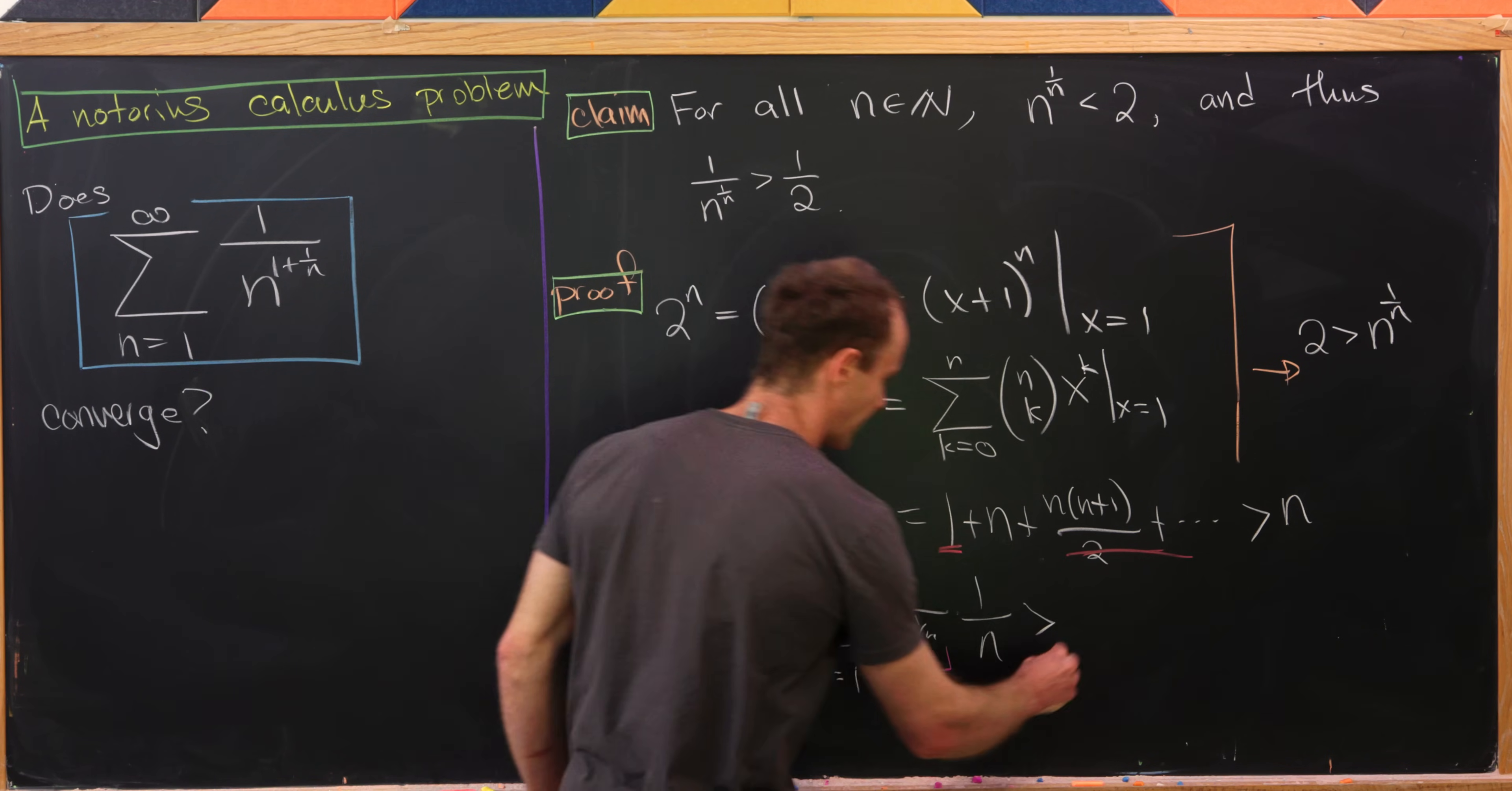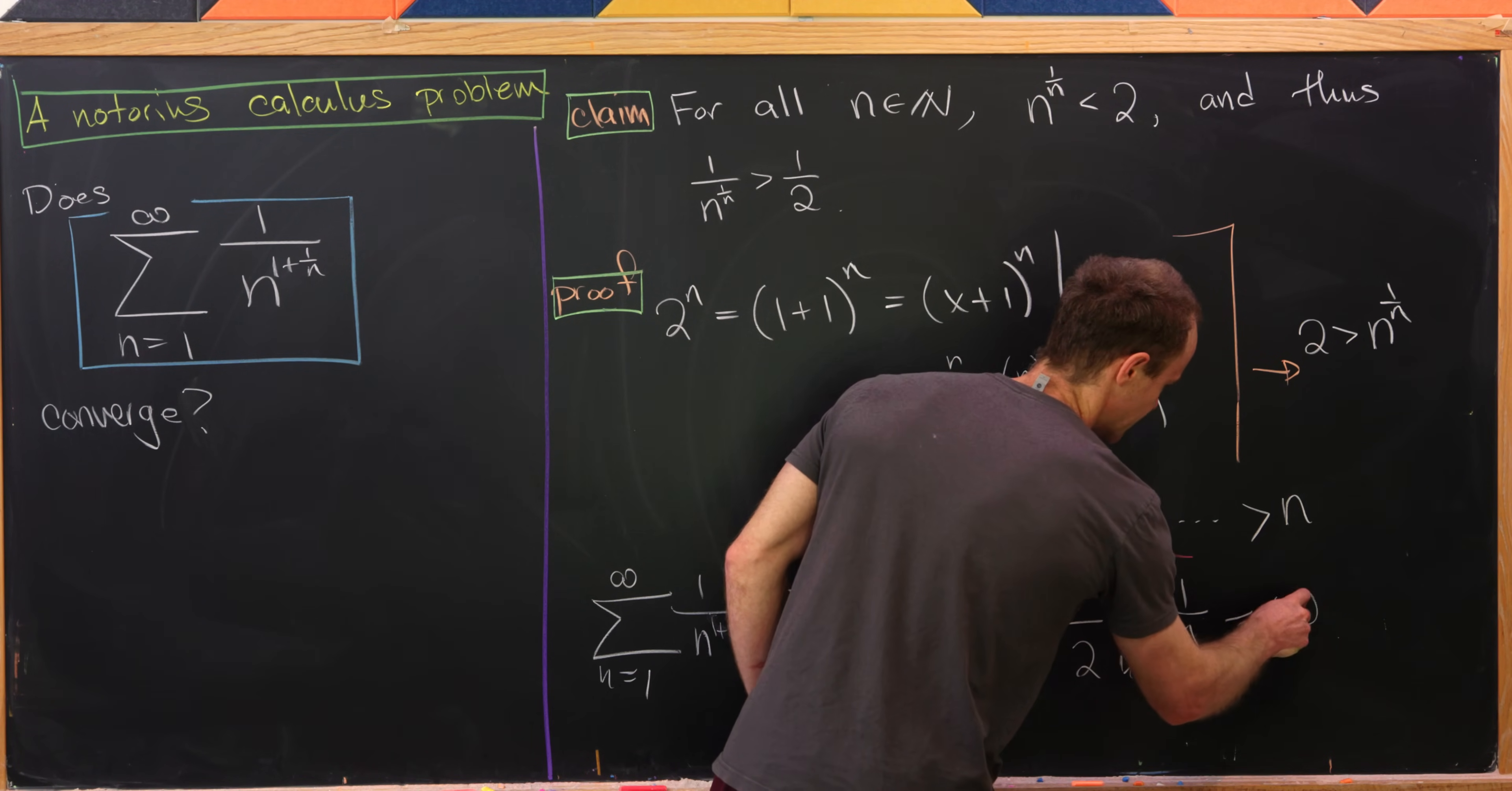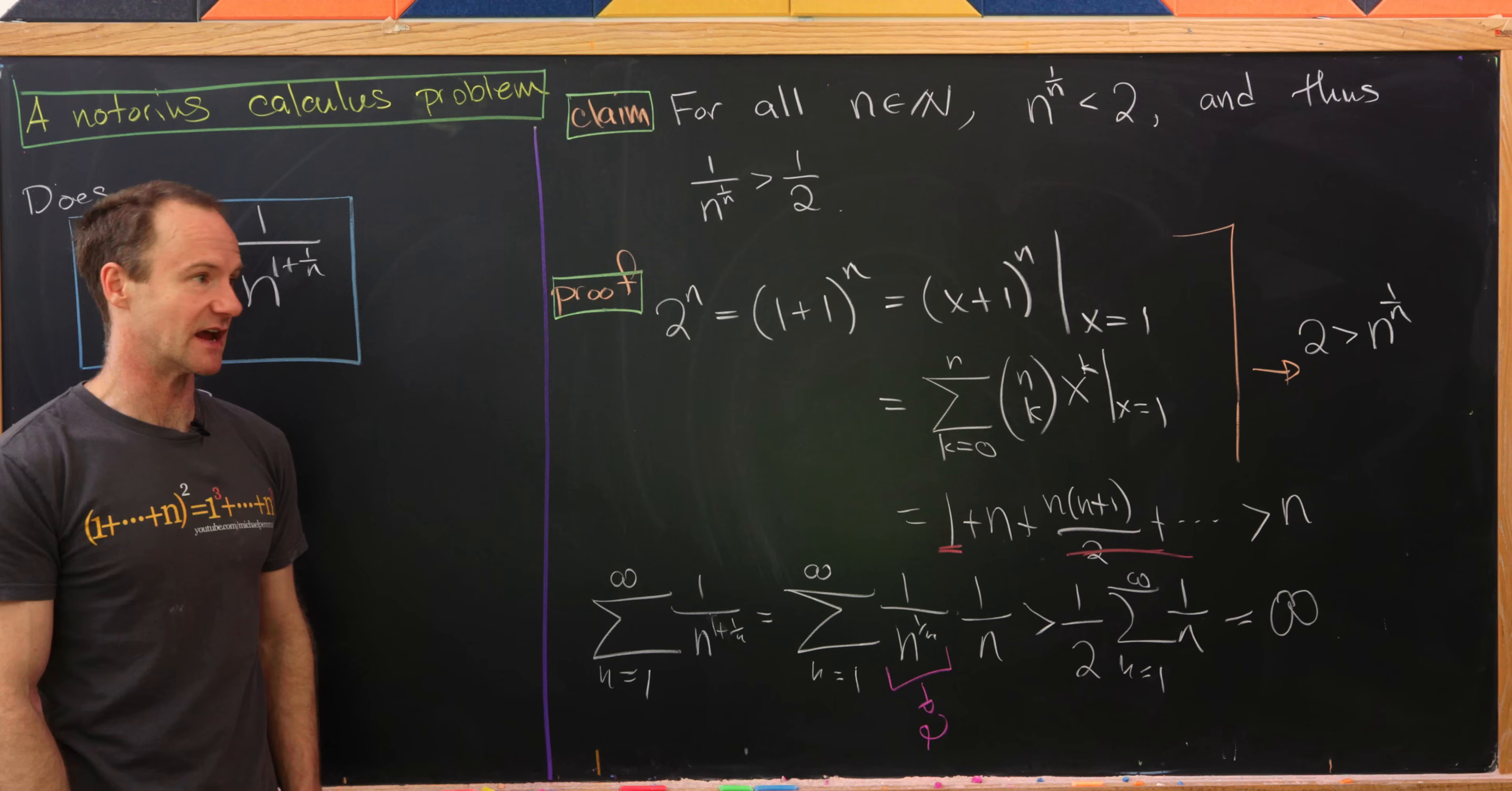So this whole thing is bigger than, well I'm going to bring the 1/2 out front, and then I have the sum as n goes from 1 to infinity of what's left over, which is simply 1/n. But we know that that famously diverges by what we recalled before. And it in fact diverges infinitely, which is pretty clear because it's the sum of positive terms. So we have our sum is bigger than something that diverges. In other words it's like bigger than or equal to infinity. But because we have that, this thing must diverge.